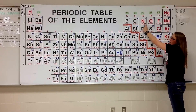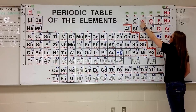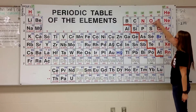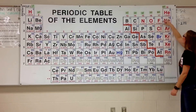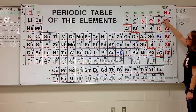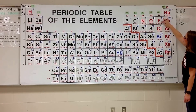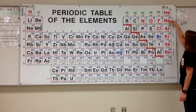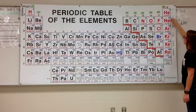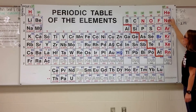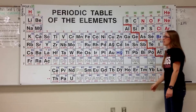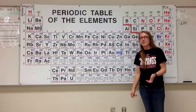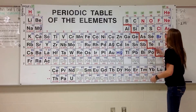Nitrogen is 1s2, 2s2, 2p3. Oxygen is 1s2, 2s2, 2p4. Fluorine is 1s2, 2s2, 2p5. And neon is 1s2, 2s2, 2p6. Notice that at the noble gas, all of my orbitals are completely filled with electrons. All of the exponent numbers add up to the total number of electrons in my orbitals.